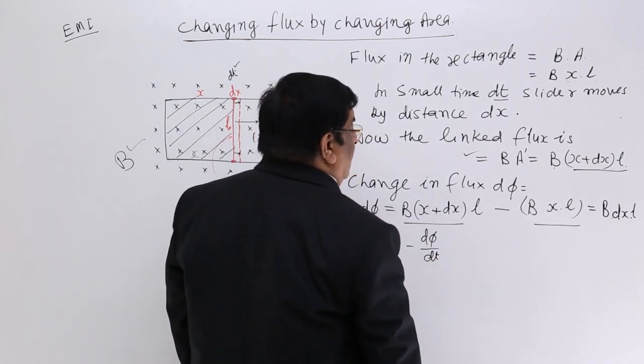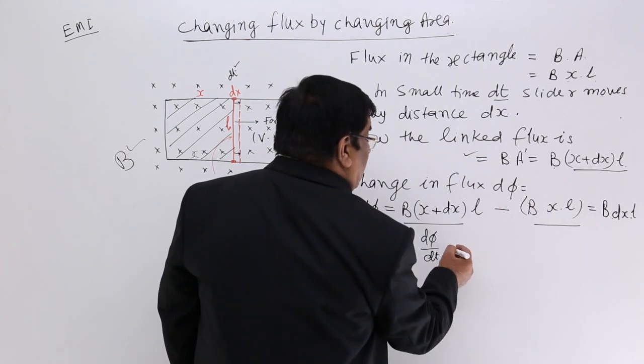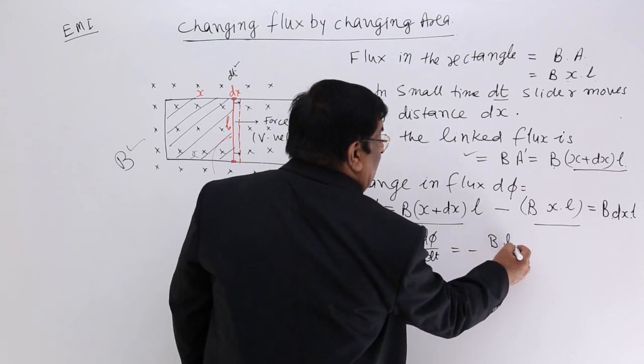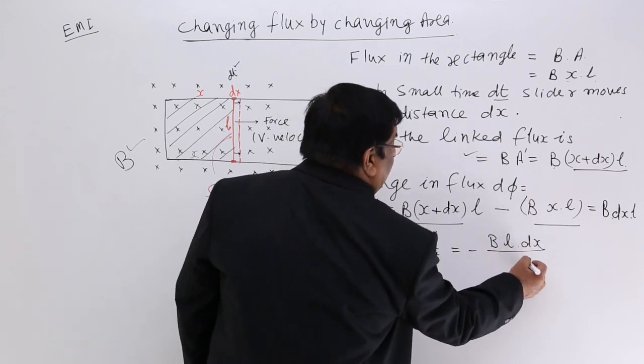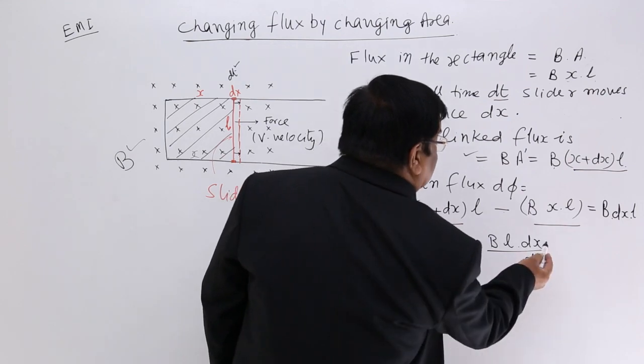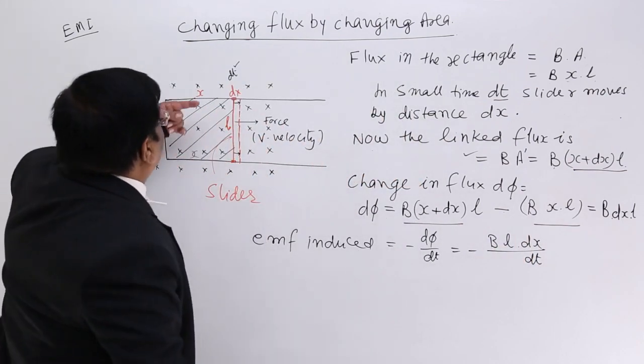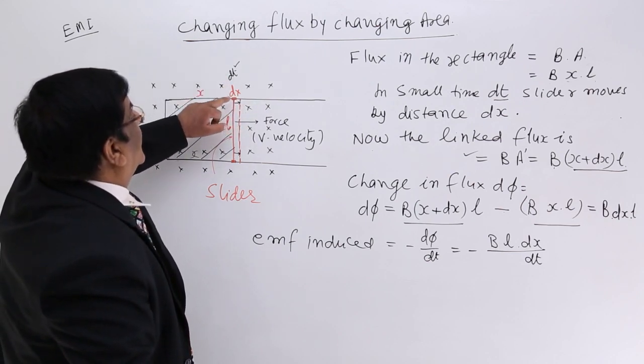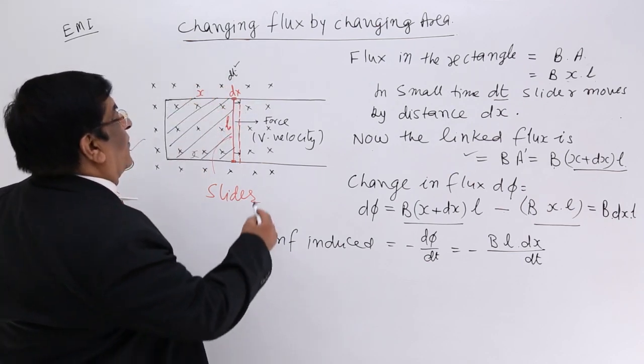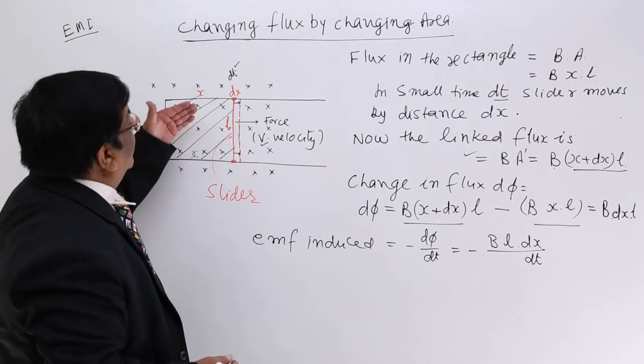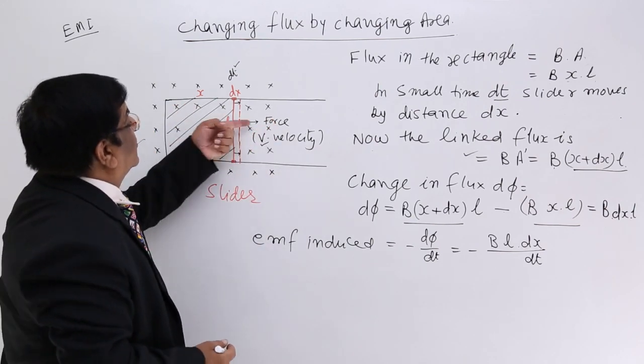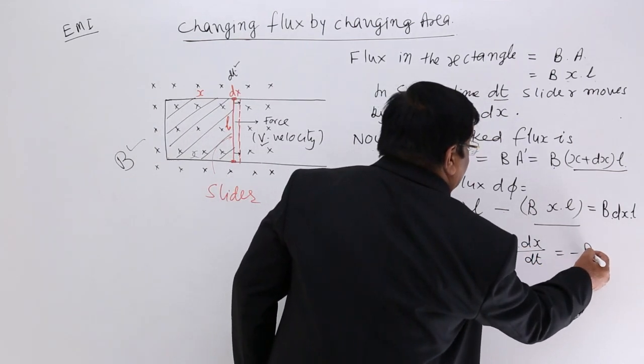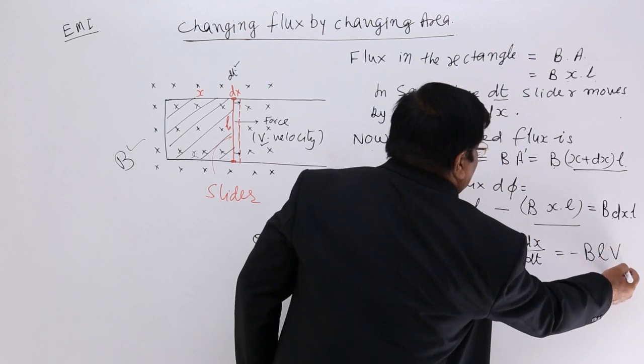How much is dφ by dt? This dφ is given by minus BL dx divided by dt. Now what is this dx by dt? x is displacement, t is the time. Displacement upon time, dx by dt is the formula for velocity. This is velocity with which this force is sliding it. So this dx by dt we can convert into V, so this is minus BLV.